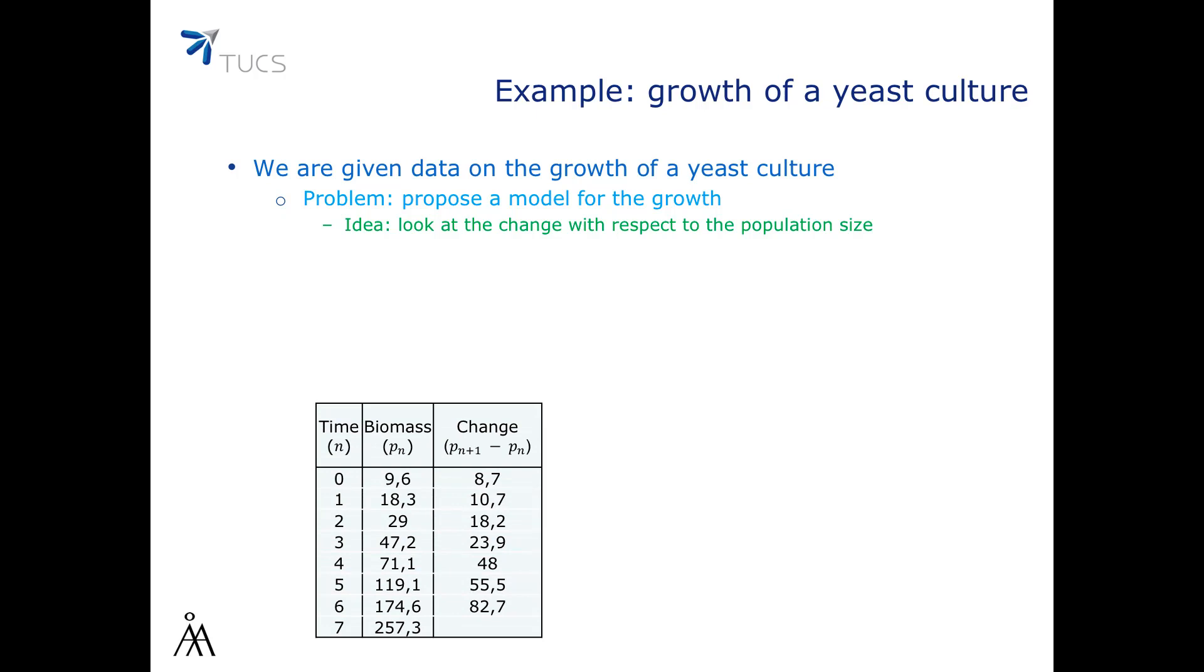We could plot the change in biomass as a function of the current value of the biomass. On this plot, we can observe that the change can be approximated as a straight line, for example, like this. And we can measure the slope of the line, which in this case turns out to be about 0.5.